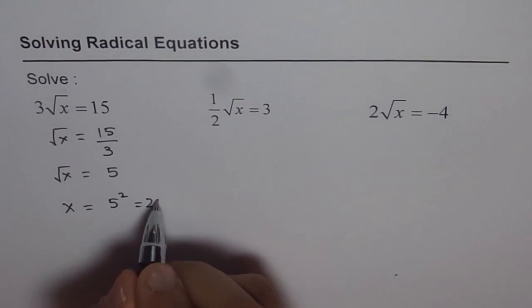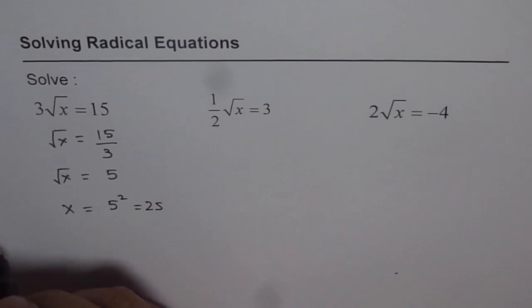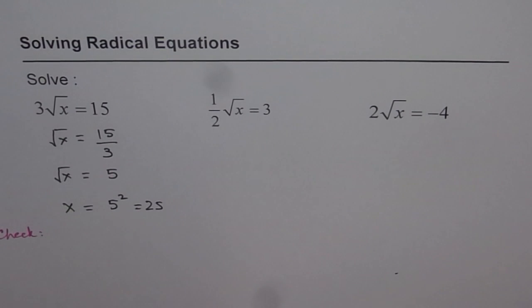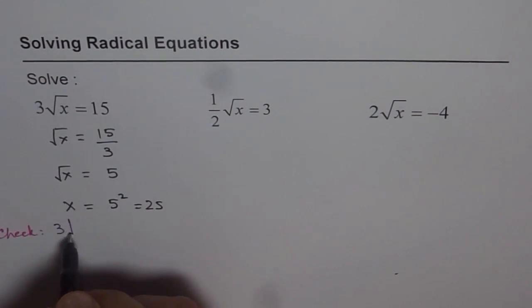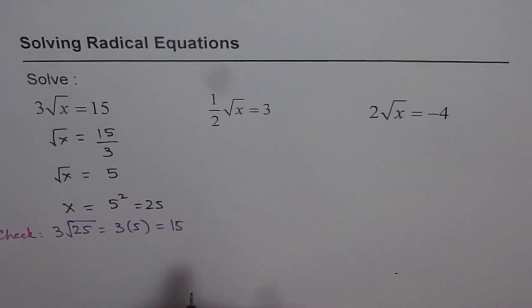That gives us 25 as our answer. So x = 25 is the answer. It is good practice to check. So let us check our answer. Let's perform the check. When you do 3 times √25, you get 3 times 5, which is indeed 15. So that is correct. That is the right solution.